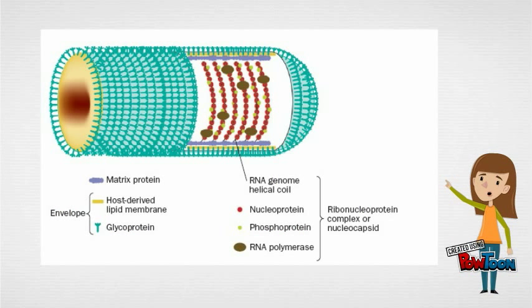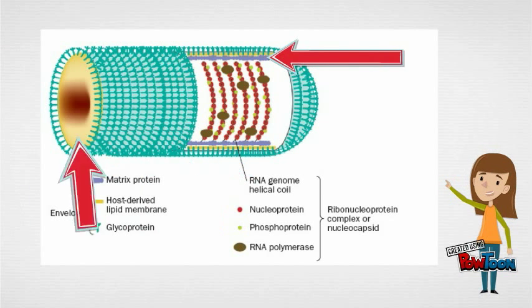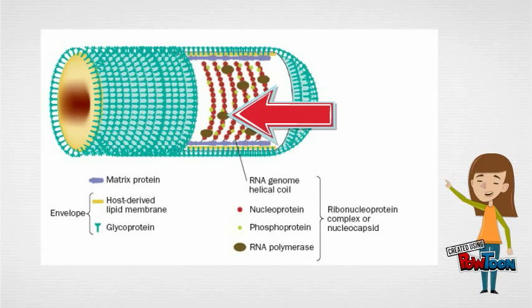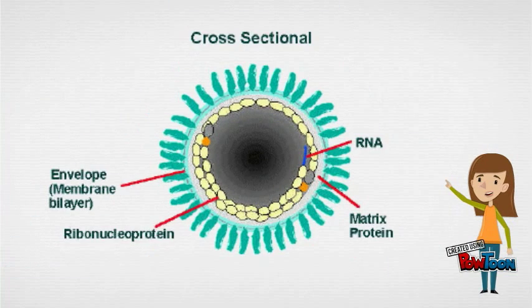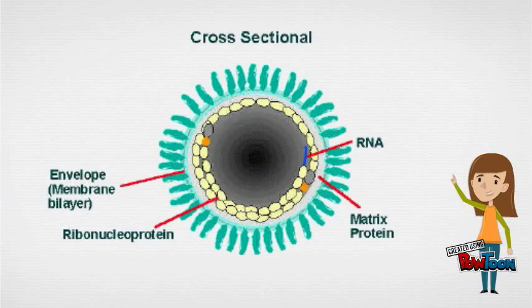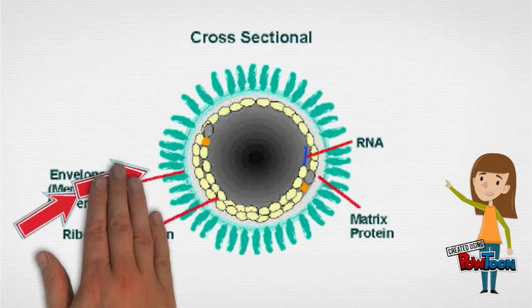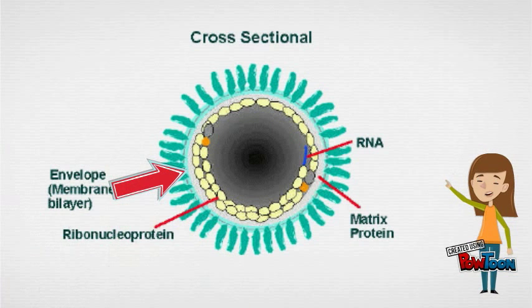The rabies genome encodes five proteins: nucleoprotein, matrix protein, glycoprotein, and polymerase. All rabies viruses have two major structural components: a helical ribonucleoprotein core and a surrounding envelope.